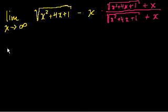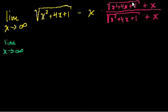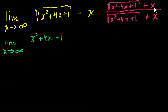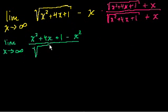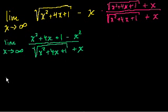So what do we have? This becomes the limit as x approaches infinity. Since this is a minus b times a plus b, we get a squared minus b squared. The numerator becomes x squared plus 4x plus 1 minus x squared, all divided by the square root of x squared plus 4x plus 1 plus x. The x squared terms cancel out, simplifying the numerator.